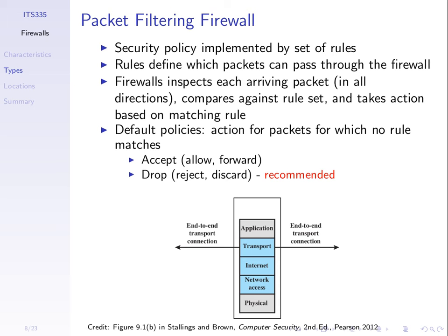Packet filtering firewalls: as a packet comes into the firewall, it checks the packet details like addresses, protocol type. Addresses include IP addresses and port numbers, and then makes a decision to drop or allow the packet through.